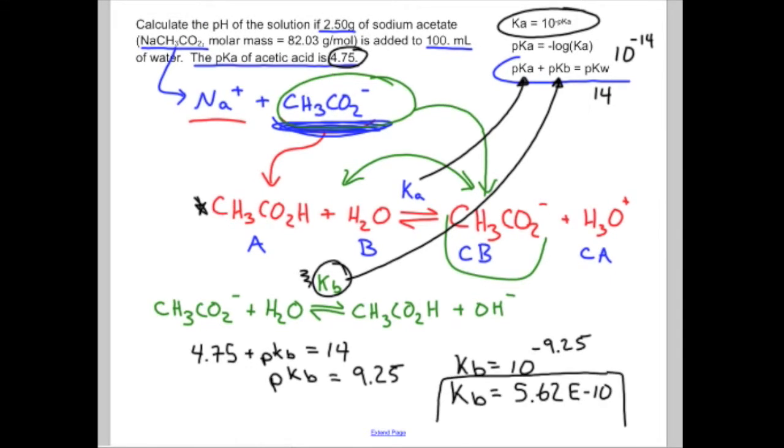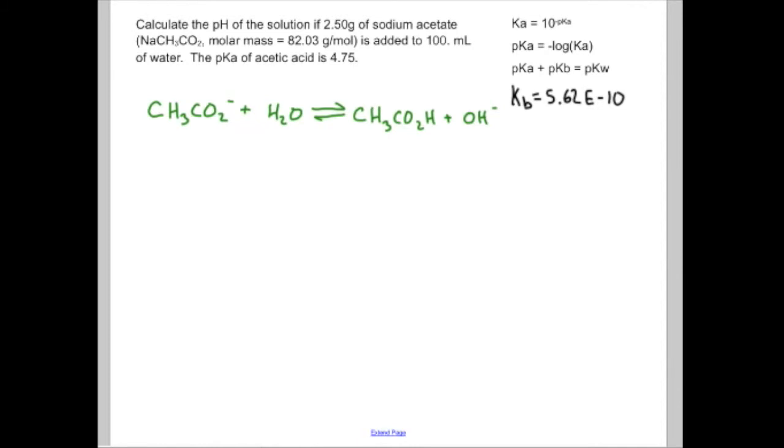So I'm going to clear some board space and I'm going to rewrite some of these numbers. I rewrote the equation just up above because I'm going to use that to start my ice table. I also put the Kb value over here. One last time, I just want to point out that sodium is in here, but it is a spectator ion.